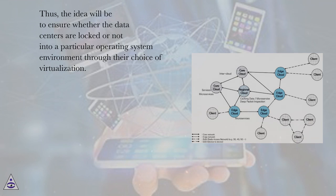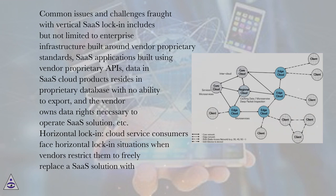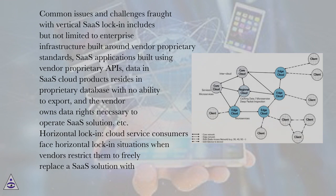Thus, the idea will be to ensure whether the data centers are locked or not into a particular operating system environment through their choice of virtualization. Common issues and challenges with vertical SaaS lock-in include, but are not limited to: enterprise infrastructure built around vendor proprietary standards, SaaS applications built using vendor proprietary APIs, data in SaaS cloud products residing in proprietary databases with no ability to export, and the vendor owning data rights necessary to operate the SaaS solution, etc.